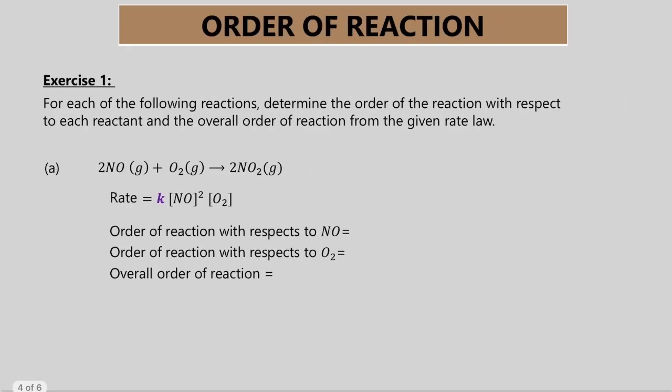So let's look at Exercise 1. There are 3 questions. You are asked to determine the order of reaction with respect to each reactant and the overall order of reaction from the given rate law. You are given the reaction equation and the rate law. So the order of reaction with respect to NO is 2, with respect to O2 is 1, and the overall order of reaction is 3.